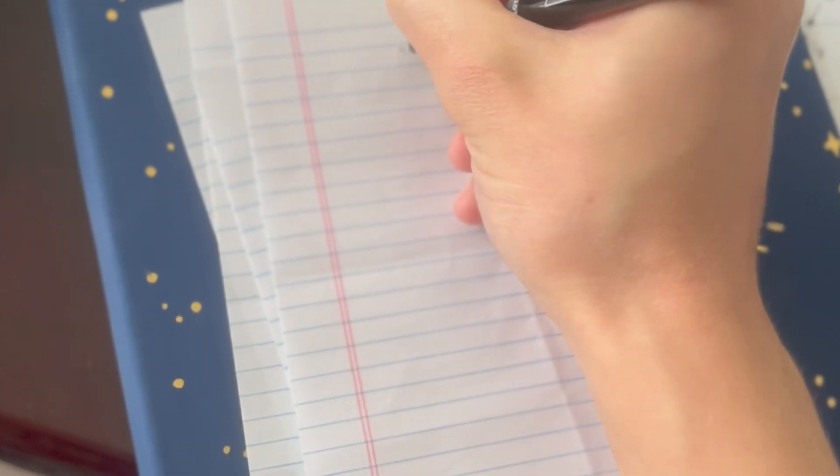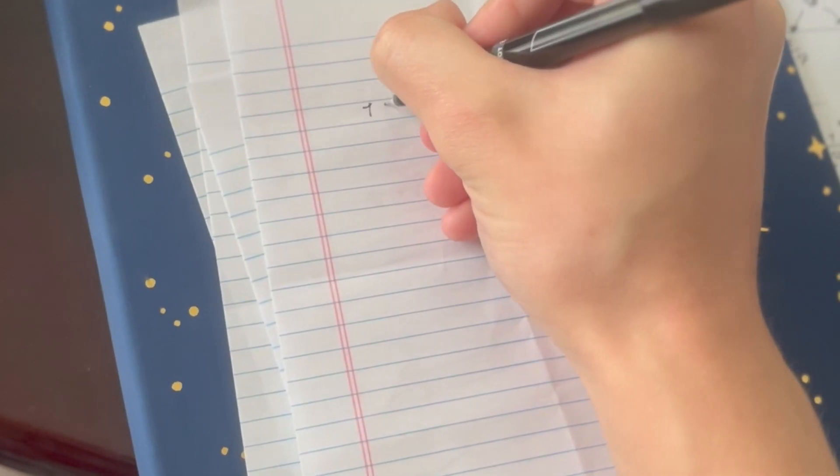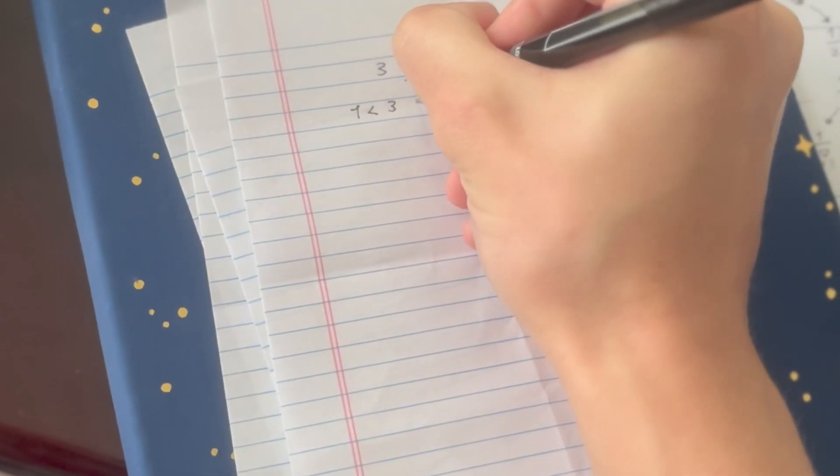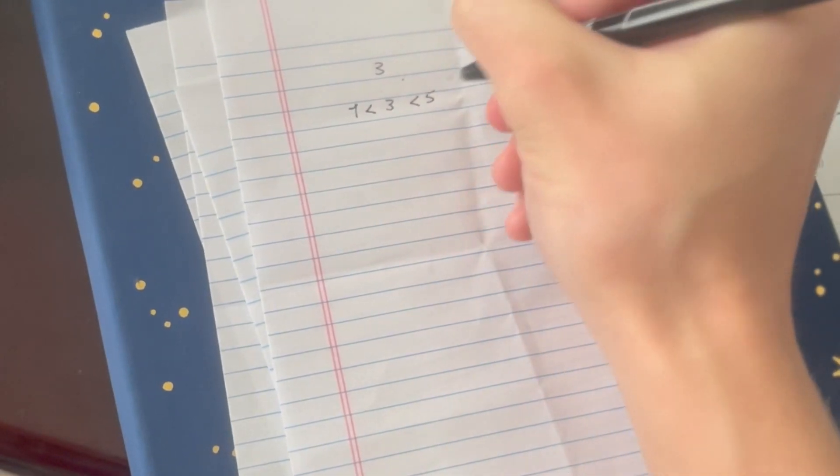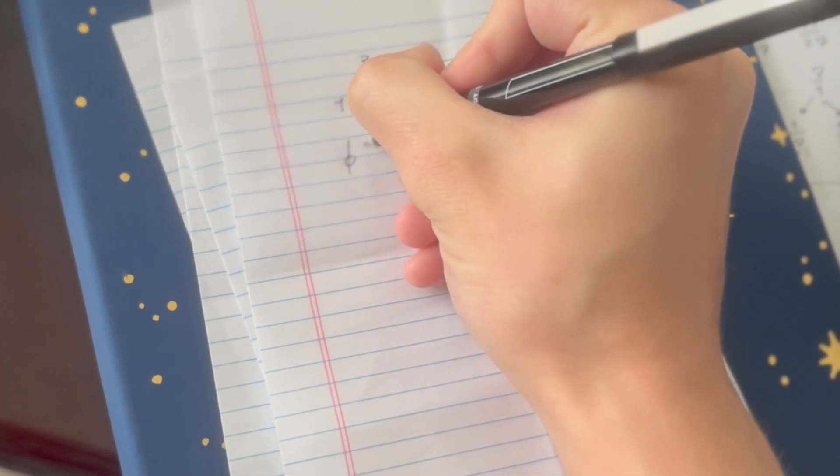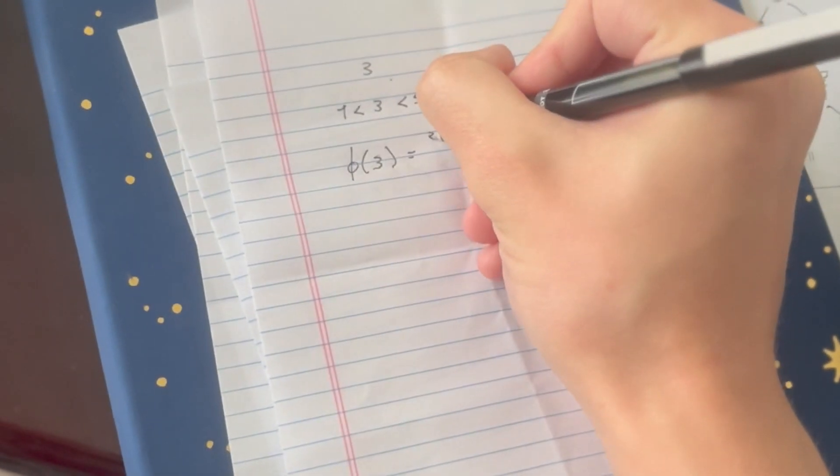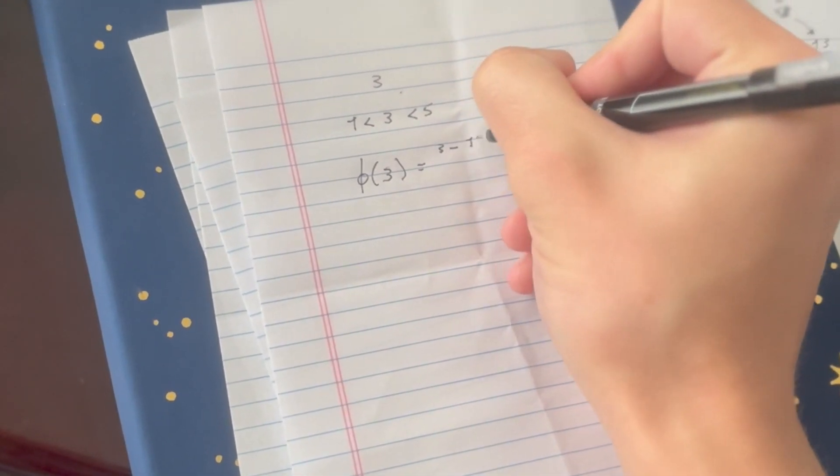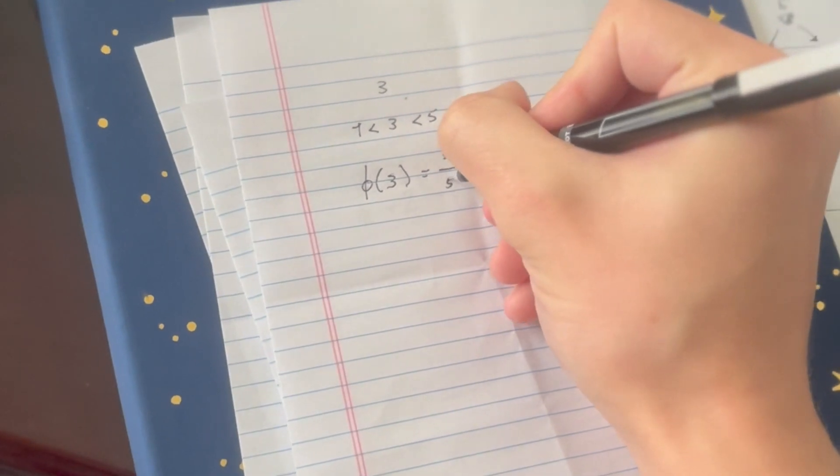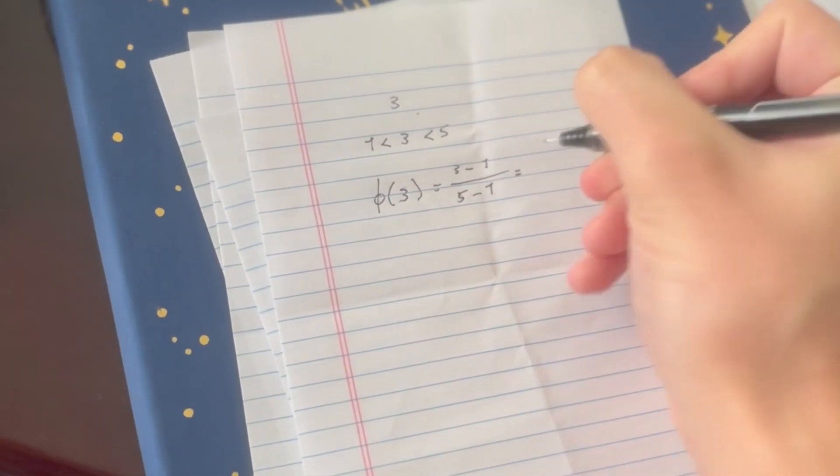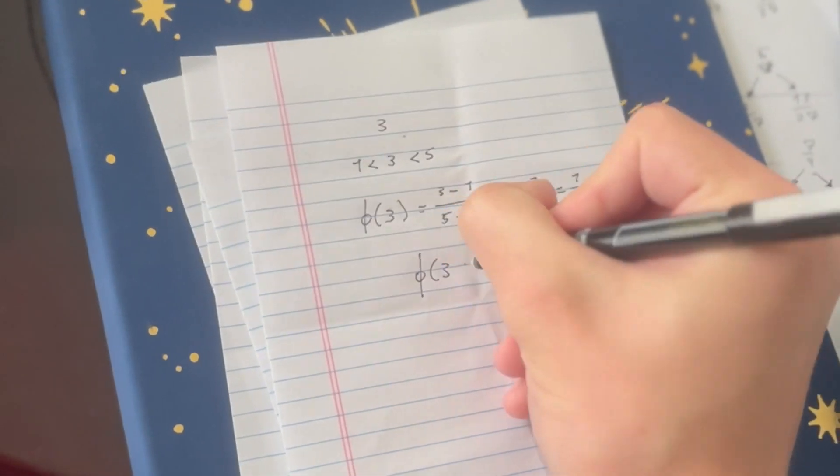So for example, 3. And you have the number 0, 1, 5, and right there, 3 is between 1 and 5. You can cut it off there and you can do this calculation where you do 3 minus 1, so 3 minus the lower one, and then divided by 5 minus 1, so the upper one minus the lower one, and you get this fraction 1 over 2.